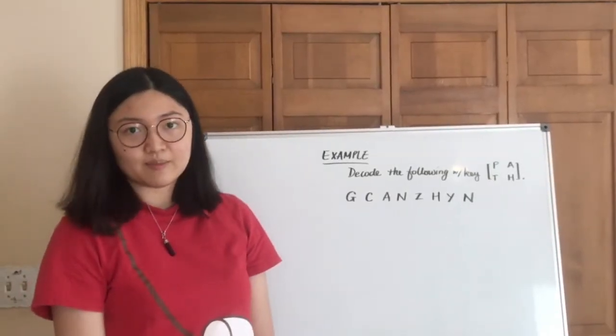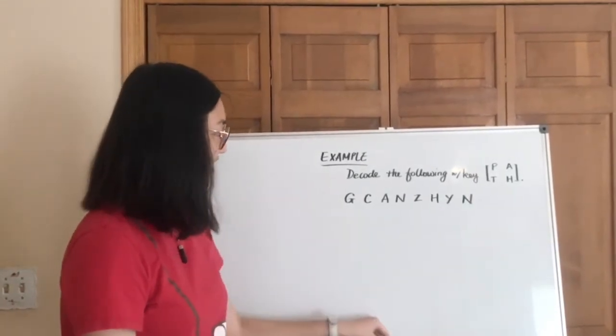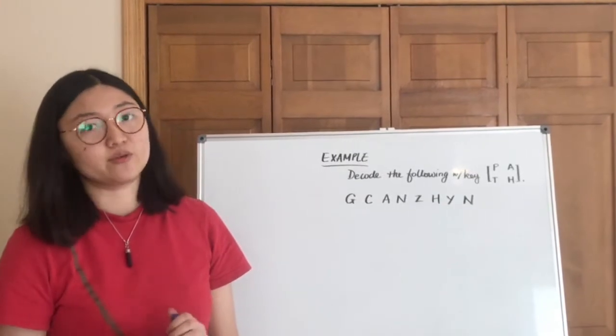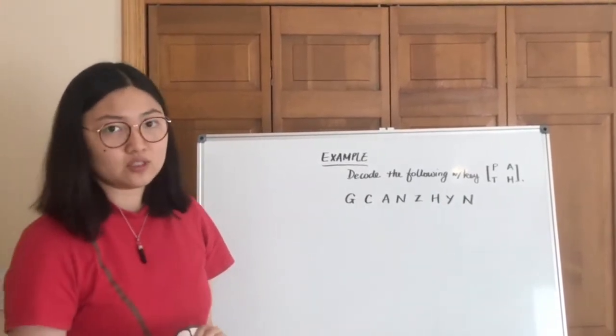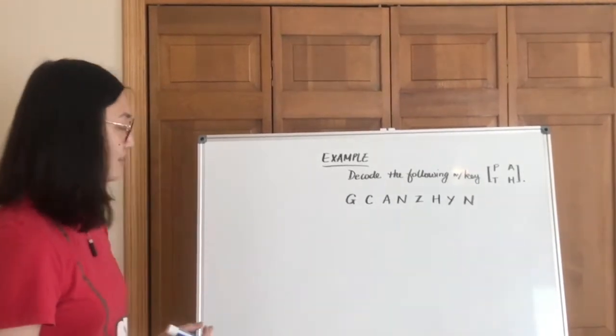So in the last video we talked about how to find the inverse of a key and now we are actually going to dive into how to decode a 2x2 hill cipher with an actual example. Once you follow me through, this will be very clear how everything happens.